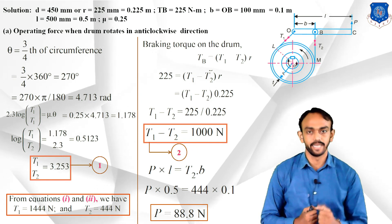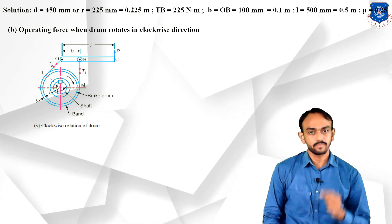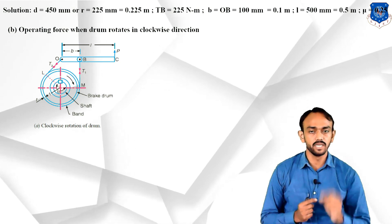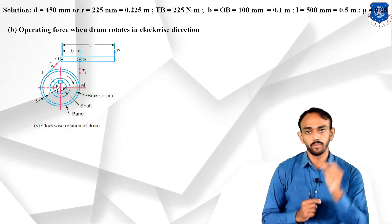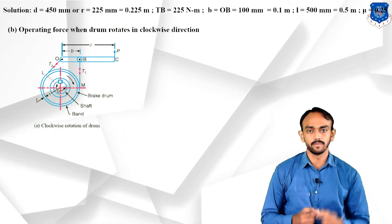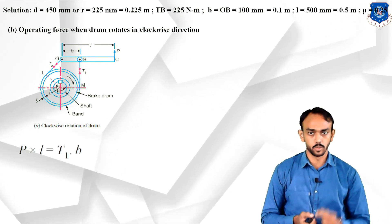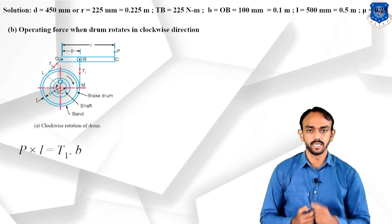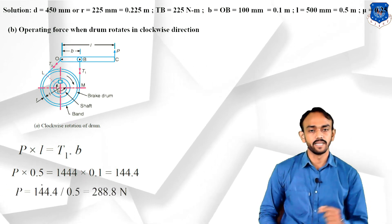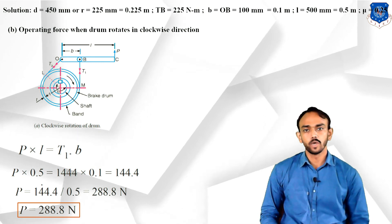Case 2: drum rotating clockwise. The tight side and slack side interchange — tight side is now at point B and slack side is at the pivot point O. Since the slack side T2 now passes through O, it contributes no moment. The moment equation becomes: P × l = T1 × b. Substituting: P × 0.5 = 1444 × 0.1, giving P = 288.8 N.